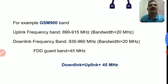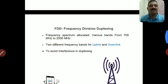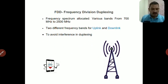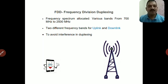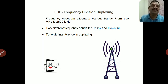यह difference और ये values अलग-अलग band में अलग हो सकती हैं। तो FDD means हमारा cellular communication system duplex system है, means हम simultaneously signal को transmit भी करते हैं और receive भी करते हैं। Transmit और receive एक दूसरे को interfere नहीं करें उसके लिए transmit frequency अलग रखते हैं और receive frequency अलग रखते हैं। इस तरह की duplexing को हम नाम देते हैं Frequency Division Duplexing।